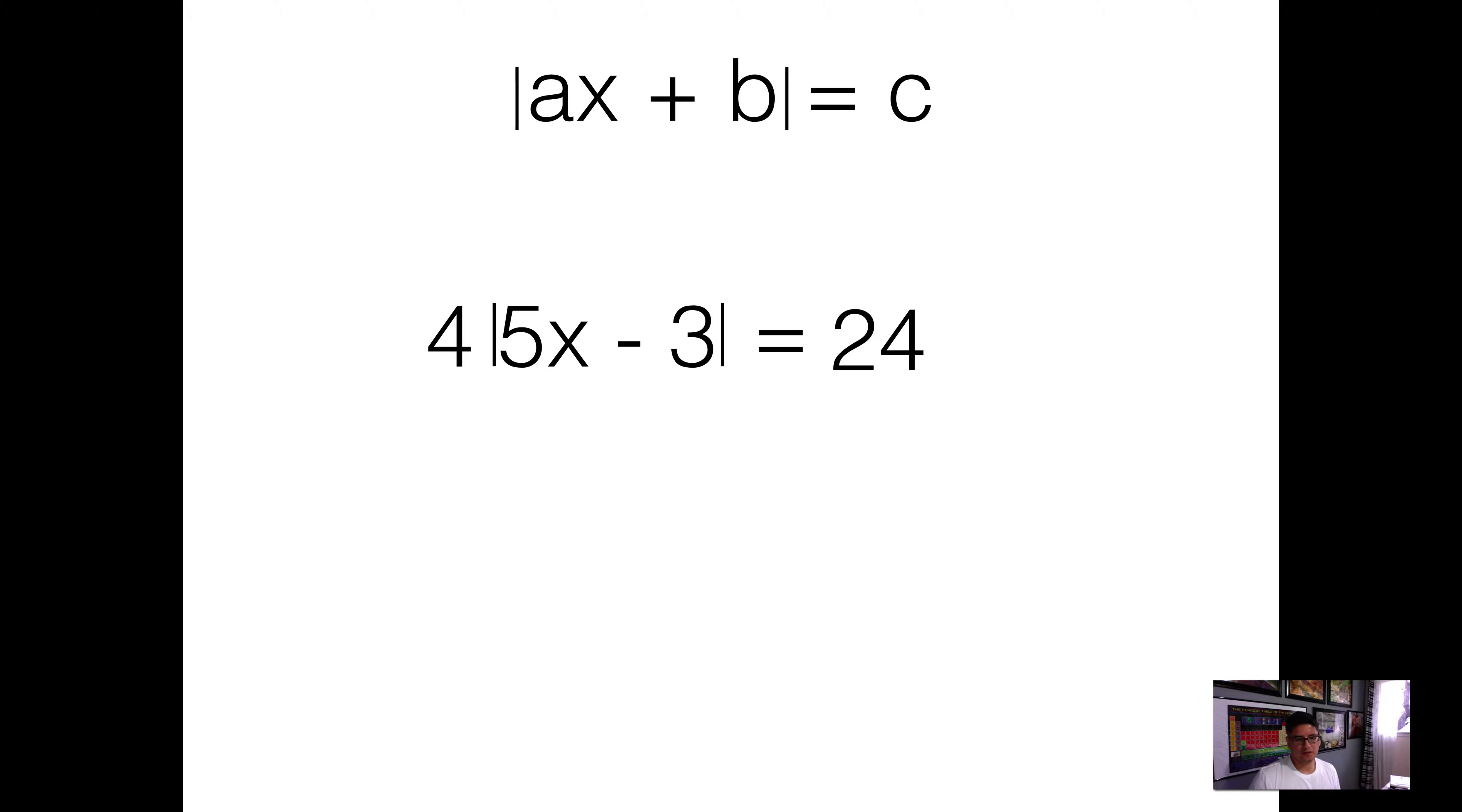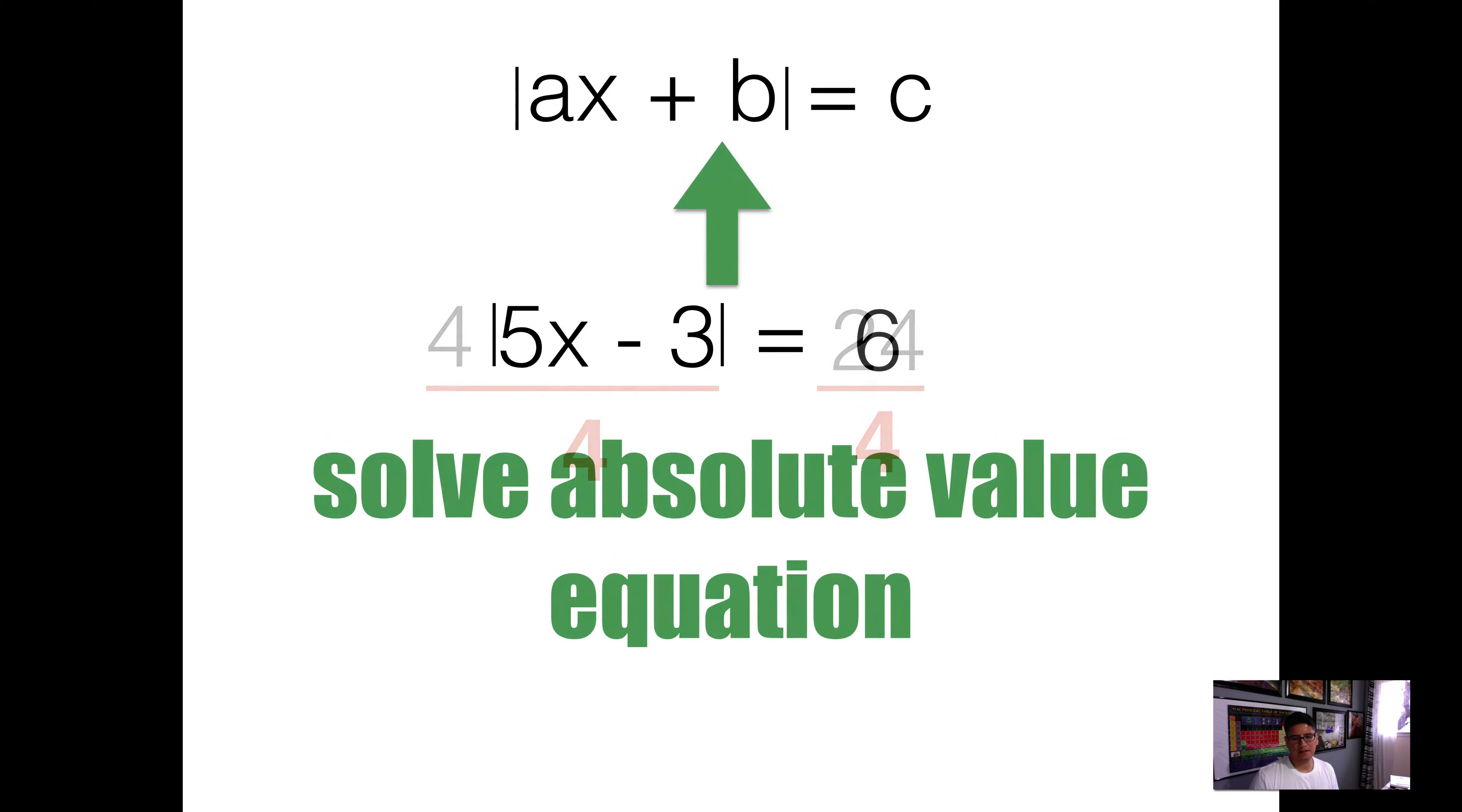Now I'm going to divide by 4. By dividing by 4, I get 6 on the other side. Now I can solve my absolute value equation because it resembles my standard equation ax plus b equals c.